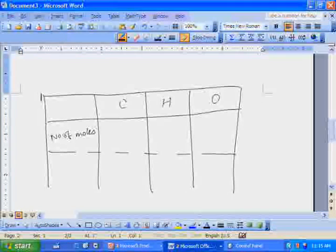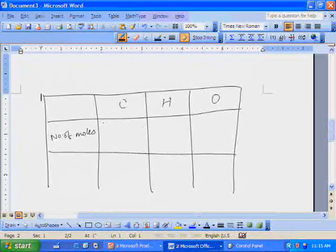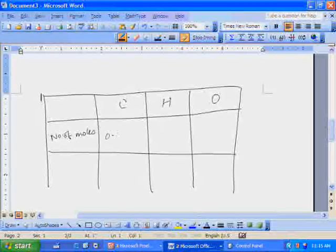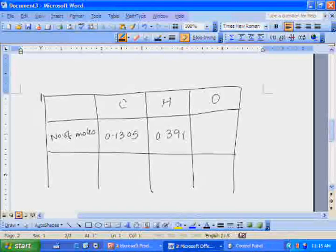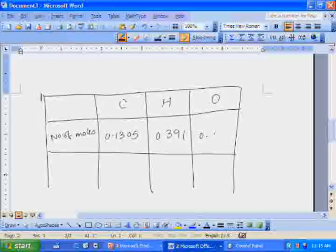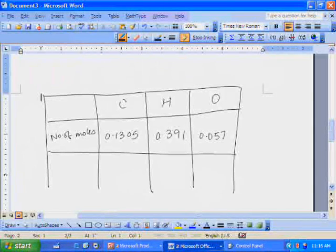The values are 0.1305, 0.391, and 0.0652.